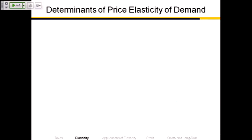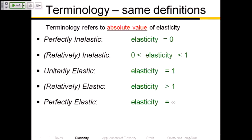The terminology for price elasticity is exactly the same as what we had for income elasticity, so you don't have to write this slide down again. If it's perfectly inelastic, the elasticity equals zero. If it's perfectly elastic, the elasticity equals infinity. If the elasticity in absolute value is between 0 and 1, it's relatively inelastic. If the elasticity is greater than 1, it's relatively elastic.